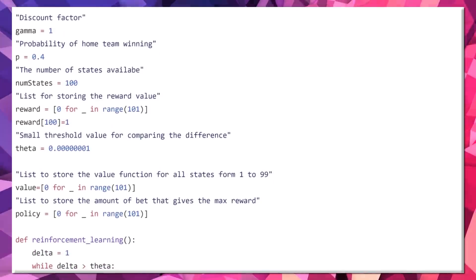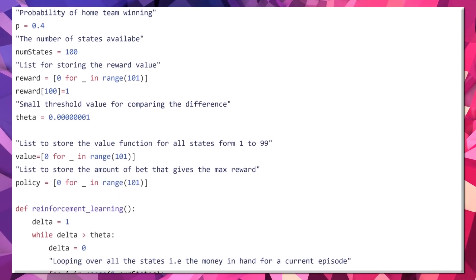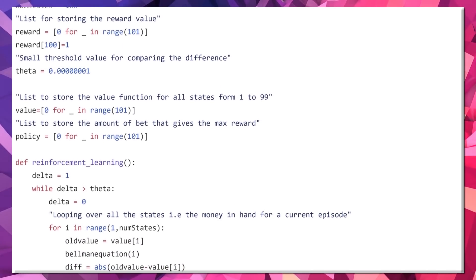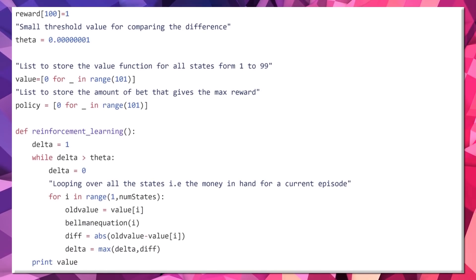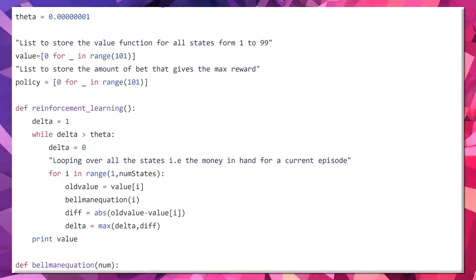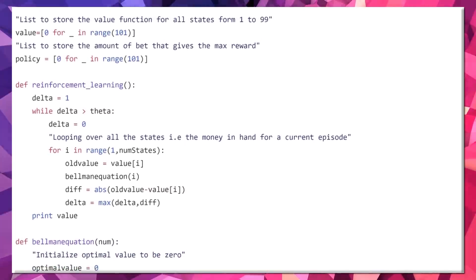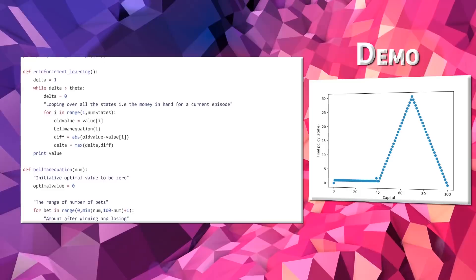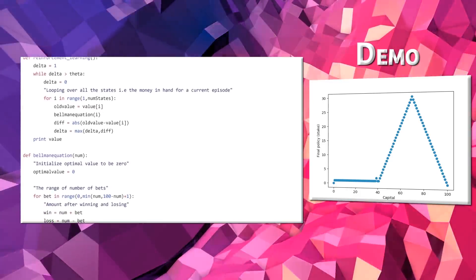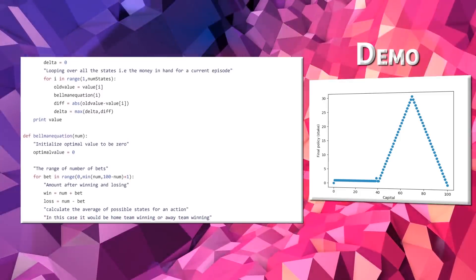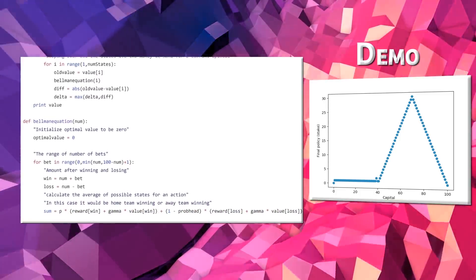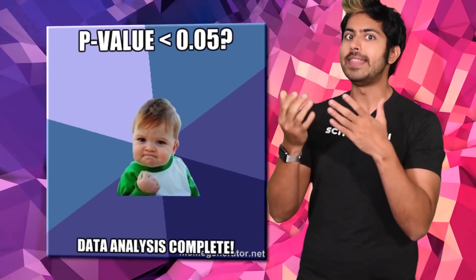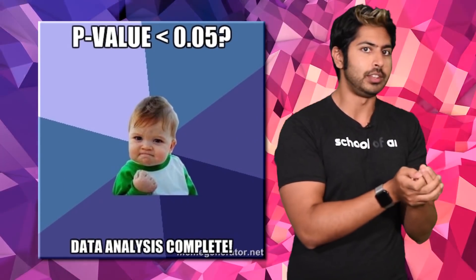In the context of our sports betting problem, where the state is how much money we have, the actions are the stakes, and the reward is zero on all transitions except when we reach our goal — then it's plus one — we can compute the optimal policy. The state value function gives the probability of winning from each state, and the optimal policy maximizes the probability of reaching $100. If we graph the value estimates versus the amount of capital we have, we'd see how the value function changes over successive sweeps of value iteration. The final policy is found for P equals 0.4, and we can use that policy to make the most likely bets in the future. Note, however, that we need that value of P to compute the optimal policy using value iteration.